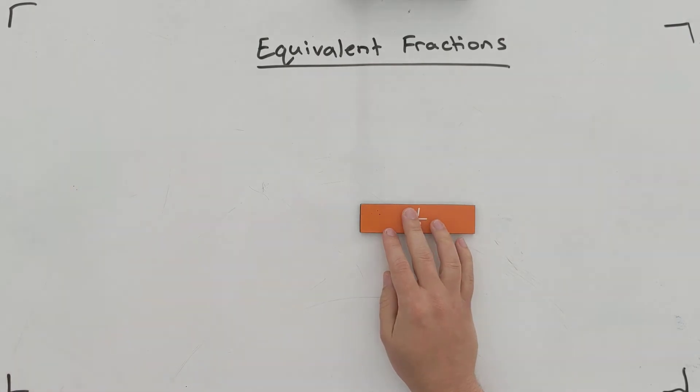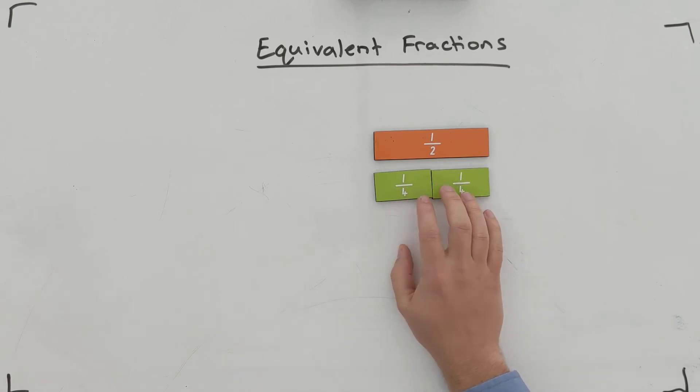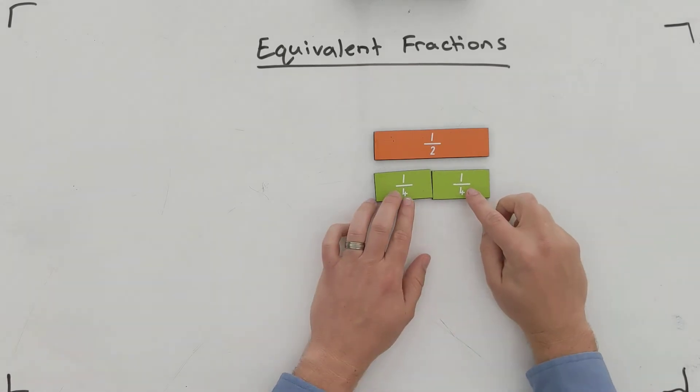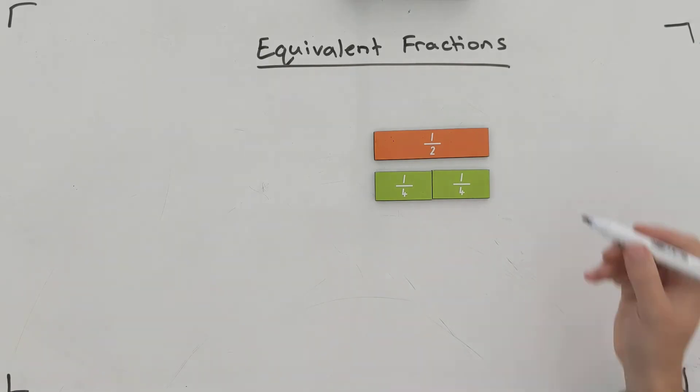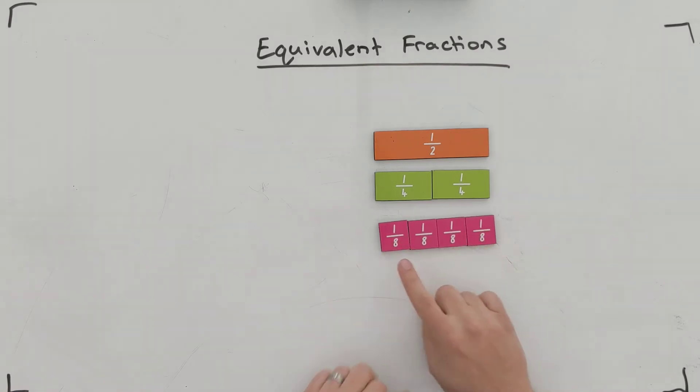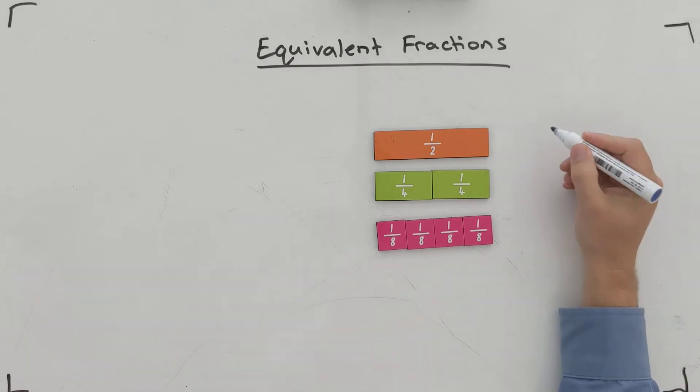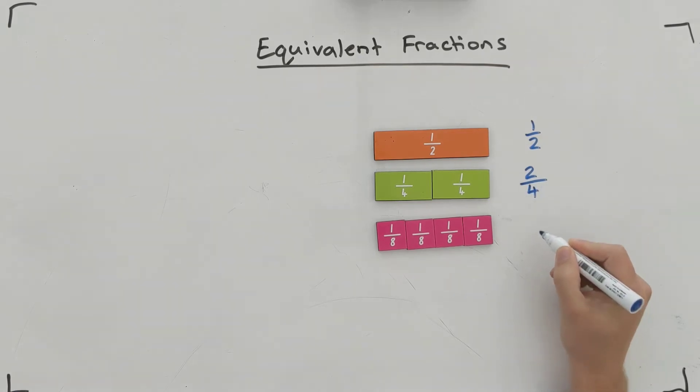Let's talk about some other things that are the same. I could bring in here two quarters and you can see that it's the same as my one half. My one half is the same as my two quarters. I could bring in as well my four eighths and you can see that they are all the same even though they are different fractions - one half, two quarters, four eighths. But they are all equaling the same.